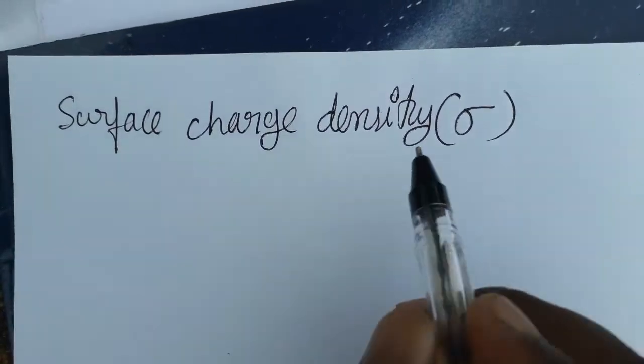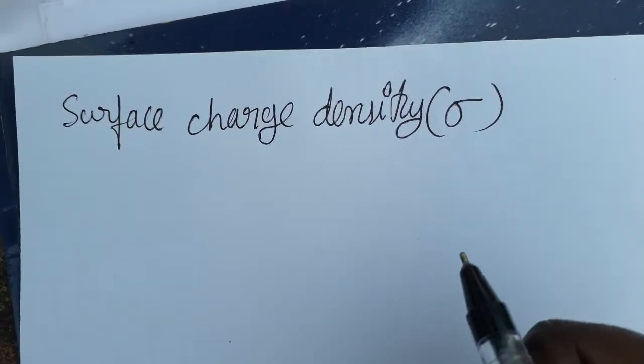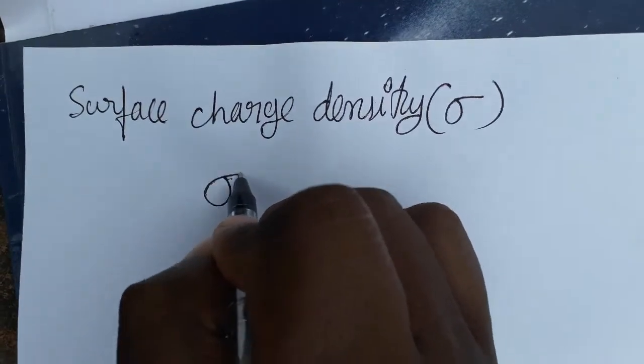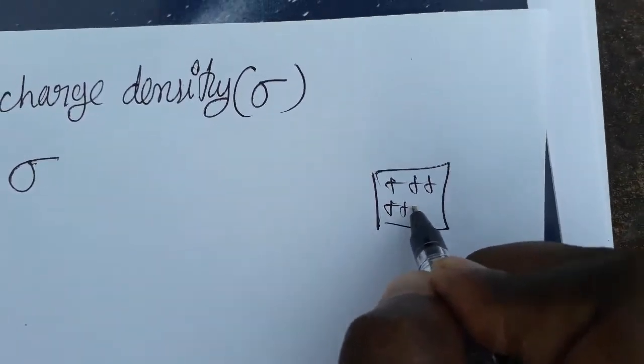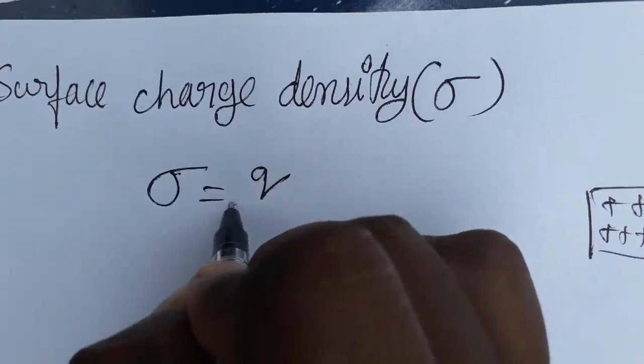Friends, today we are going to discuss surface charge density as a unit and dimensional formula. Surface charge density is for area, so how much charge present per unit area. Charge per unit area we can take it as surface charge density.